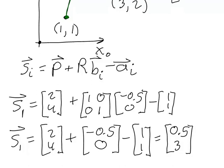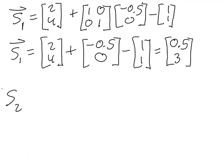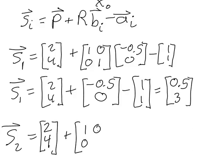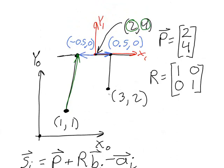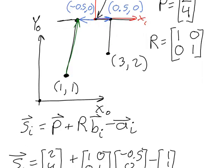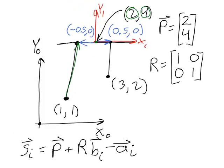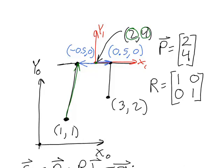Let's see if we can calculate the value for S2 as well. The value for P is going to remain the same because P is our desired position of the platform, and the rotation matrix will also remain the same. But the value for B will be different. B for joint number 2 is this other vector, which will be 0.5, 0. Then we have A2, the vector from the center of frame 0 to the bottom of the joint, which is going to be 3, 2.